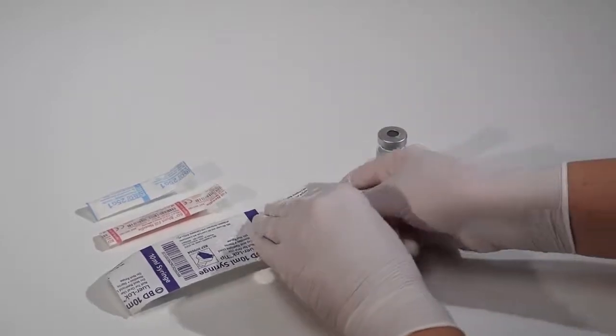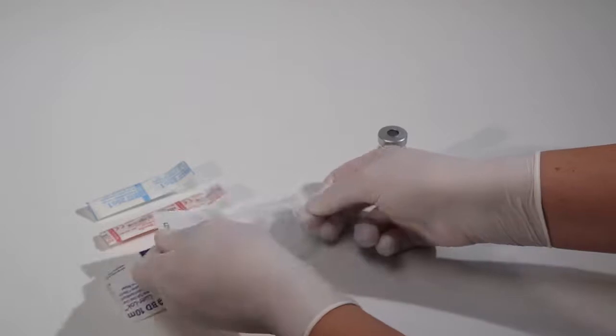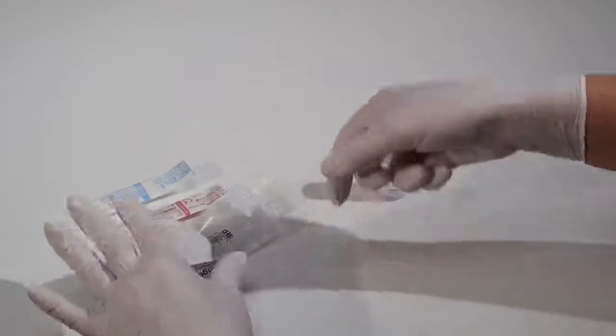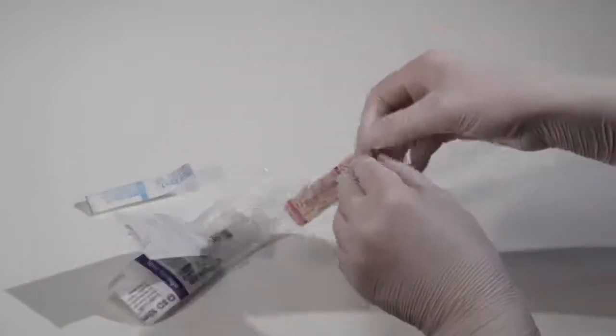Now, open the syringe and blunt fill needle packages by holding the peel tabs and peeling them back only far enough to expose the hub of the needle or the plunger rod of the syringe.